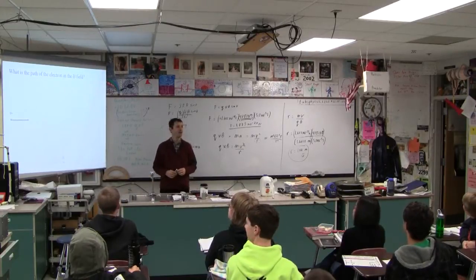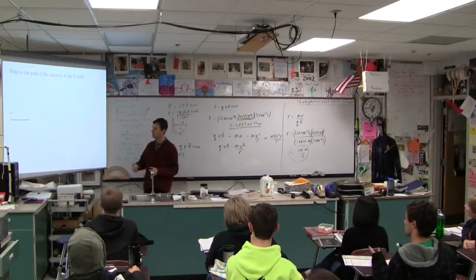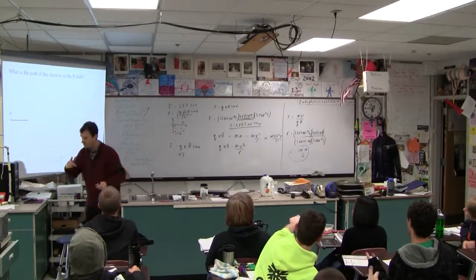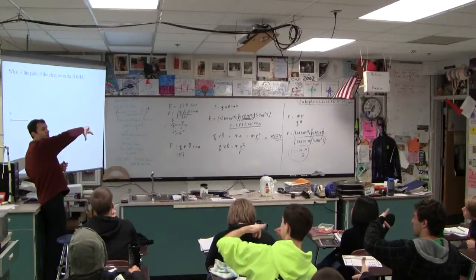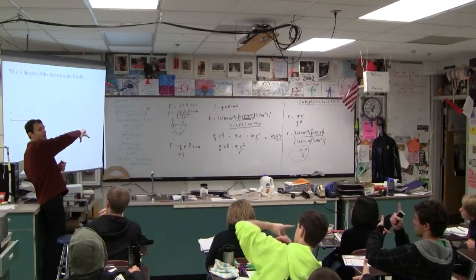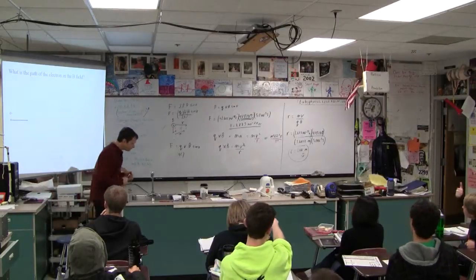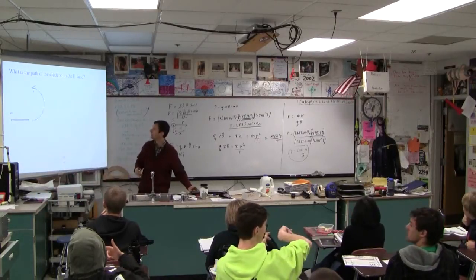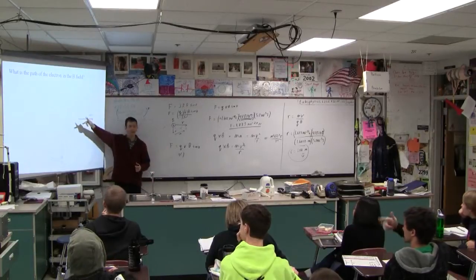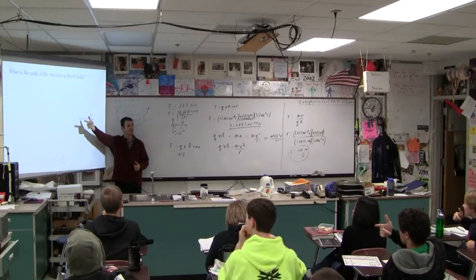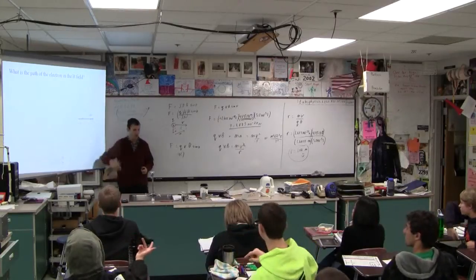An electron will curve which way? The opposite way, right? So we do exactly the same thing — index finger this way, middle finger out of the page, that gives down, but it's negative so it's up. An electron going this way: velocity is that way, middle finger is out of the page, it's up, but it's negative up, so it's down.